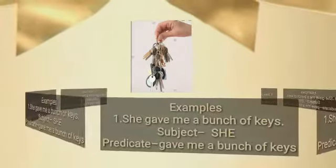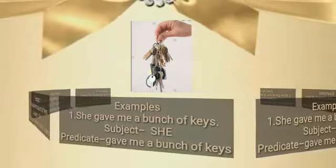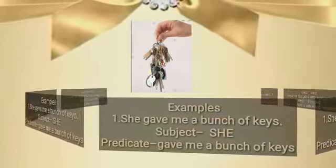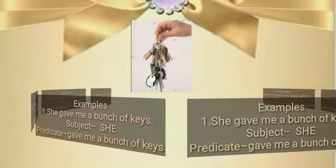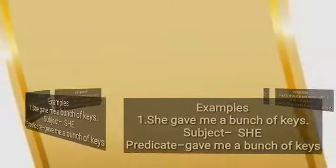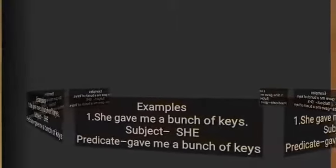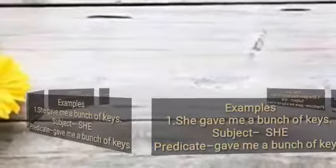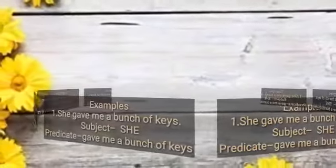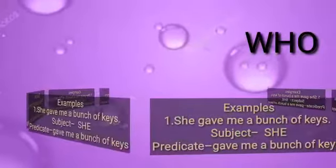Let's see a few examples to understand the topic better. The first one is: she gave me a bunch of keys. What is the subject and what is the predicate in the sentence? Let me give a hint to find out the subject easily. The part which answers the question 'who' or 'what' becomes the subject. Now look at the given sentence — she gave me a bunch of keys. Ask the question: who gave me a bunch of keys?